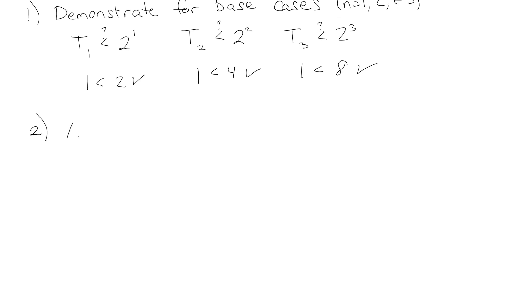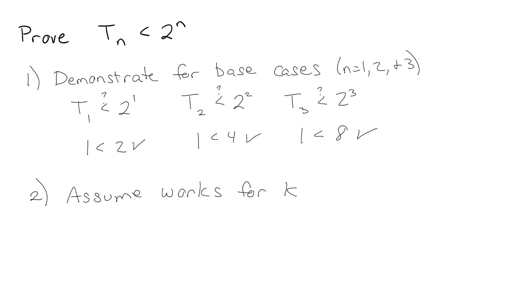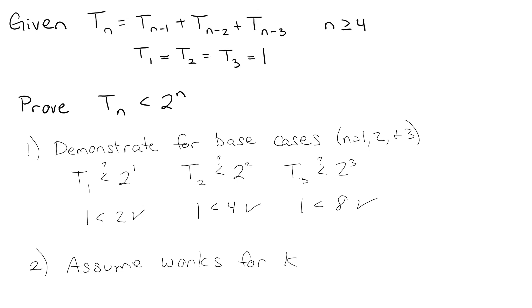The next thing that we want to do is we want to assume it works for K. But actually we also want to show, so if we're going to start at say n equals 4, we can't just assume that it works for 4, we also have to assume that it works for 3 and 2 as well. Because remember the idea is we're going to move up and say okay well if it works for 1, 2, and 3, then it's got to work for 4.